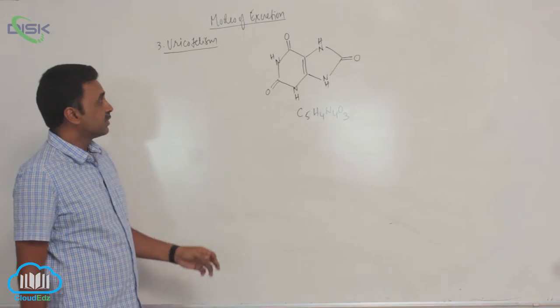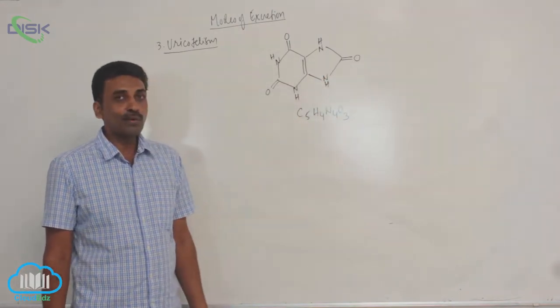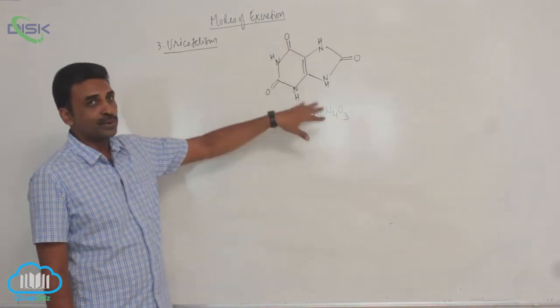The uricotelic animals, see this is uric acid, C5H4N4O3. So this is the uric acid.